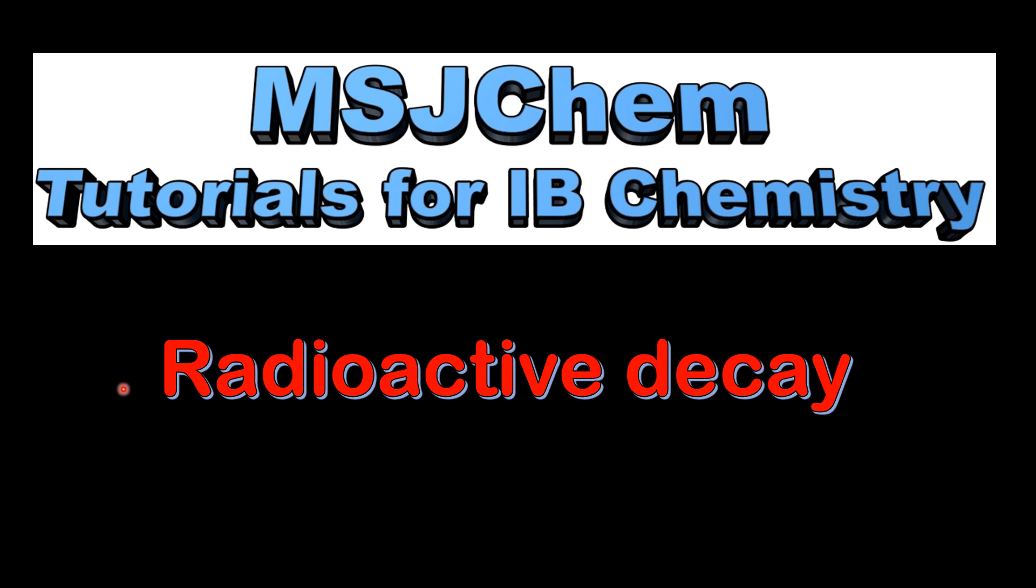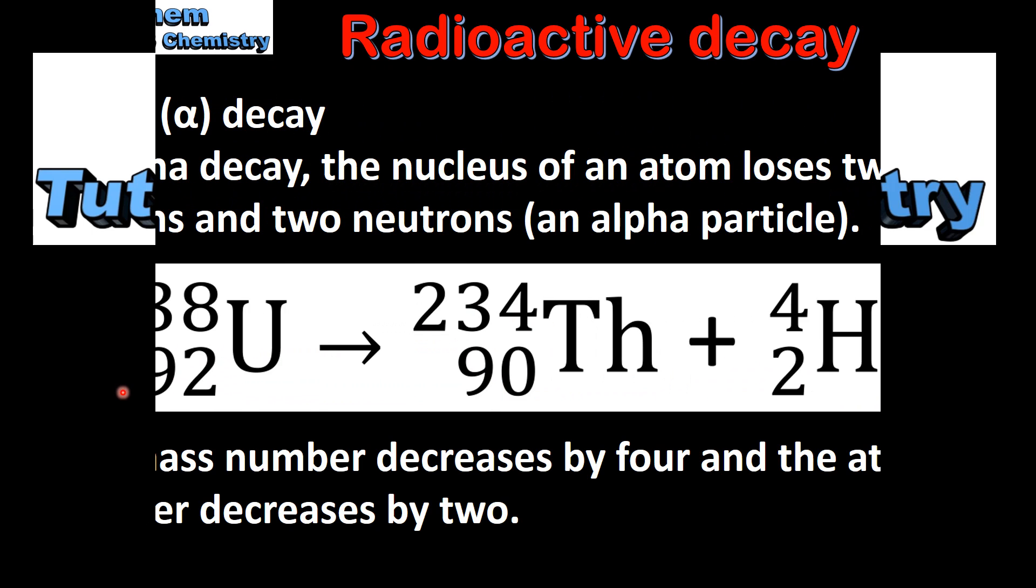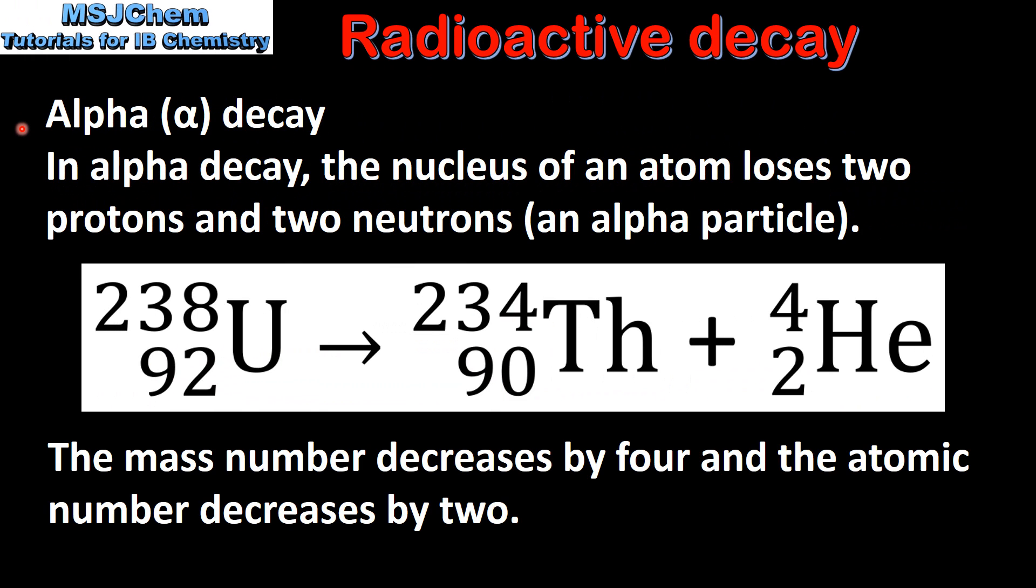This is MSJChem, in this video I will be looking at radioactive decay. We will start by looking at alpha decay. In alpha decay the nucleus of an atom loses two protons and two neutrons which is otherwise known as an alpha particle.